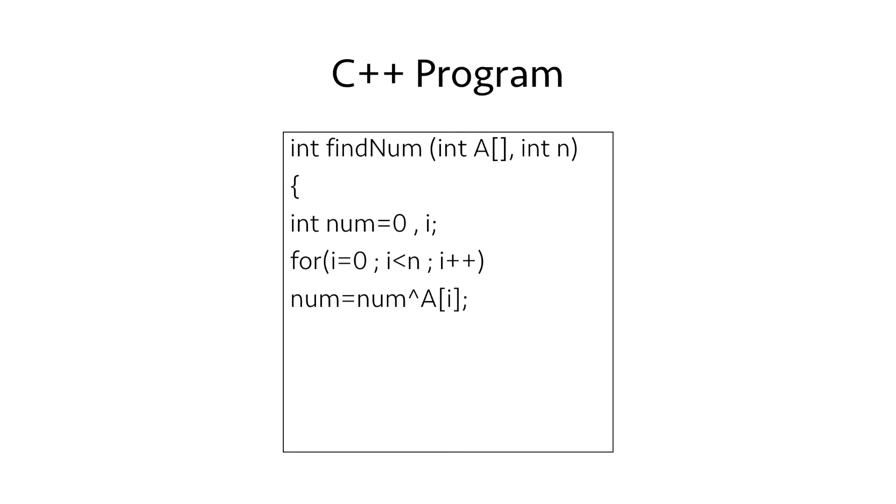So after our loop is over we'll have the number which is not in pair in the variable num. In the final step we return the variable num which is our answer.